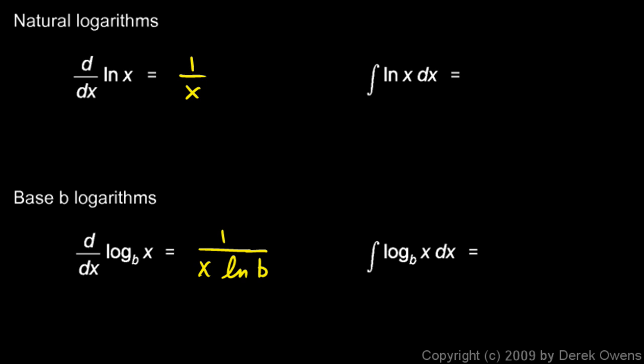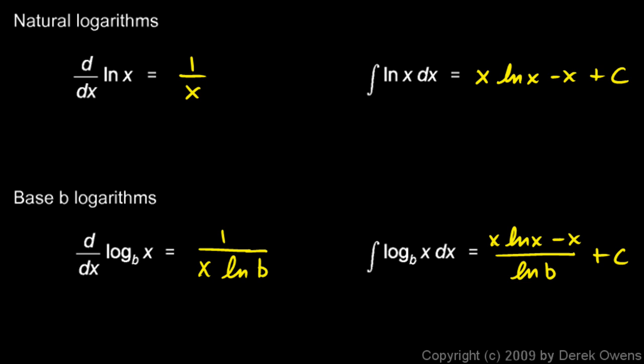Coming back to the reference sheet, there are only two remaining entries: the integral of ln(x) and the integral of log base b of x. The integral of ln(x) is x·ln(x) minus x plus c. The integral of log_b(x) is (x·ln(x) minus x) divided by ln(b) plus c. You can verify these by differentiating. That wraps up derivatives and integrals of exponential and logarithmic functions.